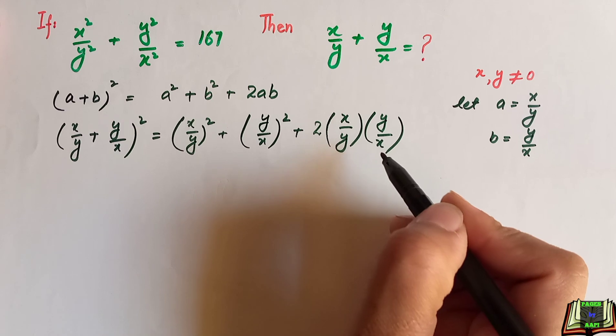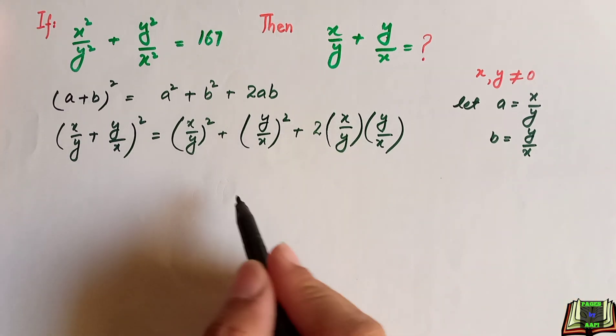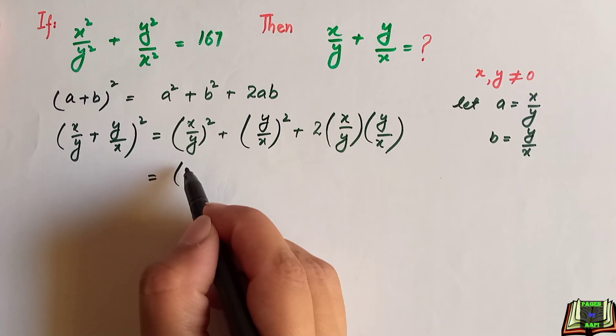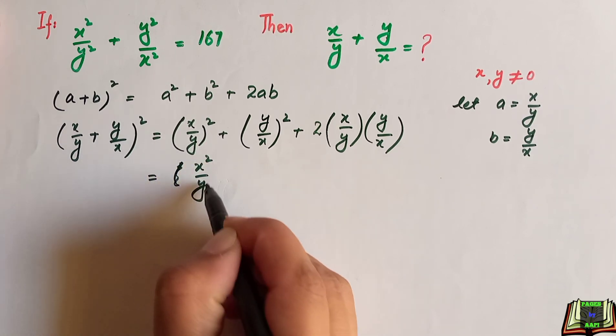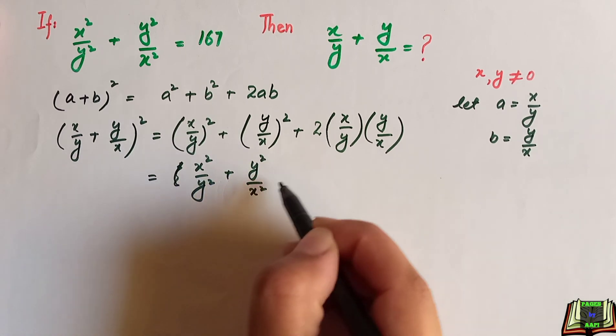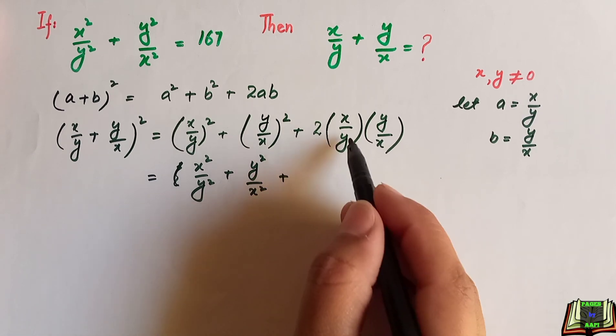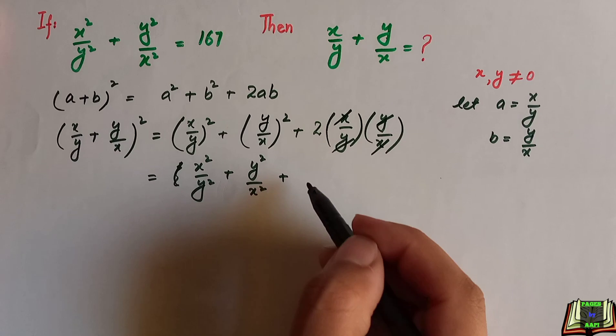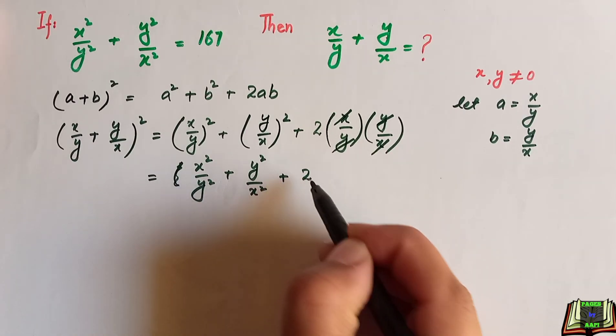What we are going to do next is we are going to simplify the left hand side only. So it will become x square divided by y square plus y square divided by x square plus 2. y and y will be cancelled out and x and x will be cancelled out, but we are left only with 2.